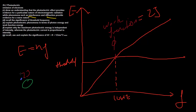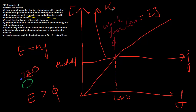The threshold frequency is significant because it goes back to the particulate nature of light, showing that one photon is interacting with one electron. The photon energy must be greater than the work function for photoelectric emission to occur. All extra energy beyond the work function becomes kinetic energy. When the photon has exactly the work function energy, the electron is only just emitted with no extra kinetic energy, because all its energy has been used in overcoming the attraction of the atom.